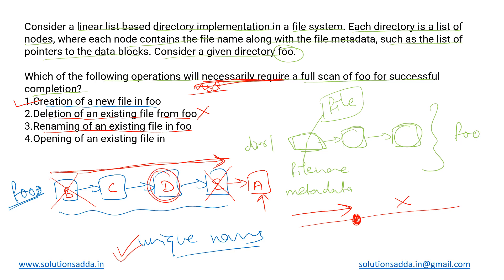Then I will need to traverse the entire directory named foo and check if there is already an existing file with the name A in it or not. Again this operation necessarily requires a complete scan because after scanning all the nodes only then we can decide whether that particular rename operation can be done or not.